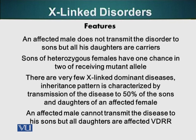There are very few X-linked dominant diseases. The inheritance pattern is characterized by transmission of the disease to 50% of both sons and daughters. If it is a dominant disorder, it will be transmitted equally to sons and daughters since both have a 50% chance. Even daughters who receive a defective X chromosome carrying a defective gene will also be affected. An affected male cannot transmit the disease to his sons, but all daughters are affected.